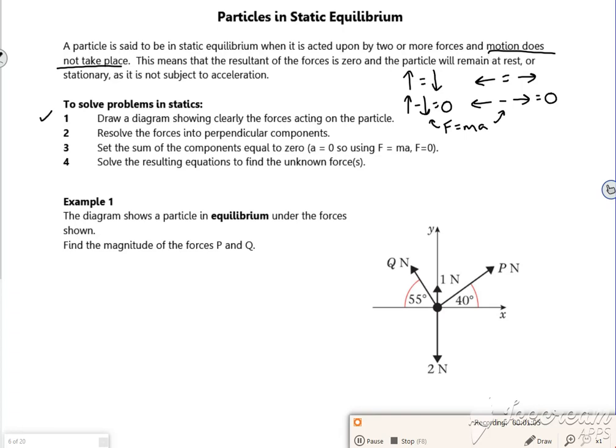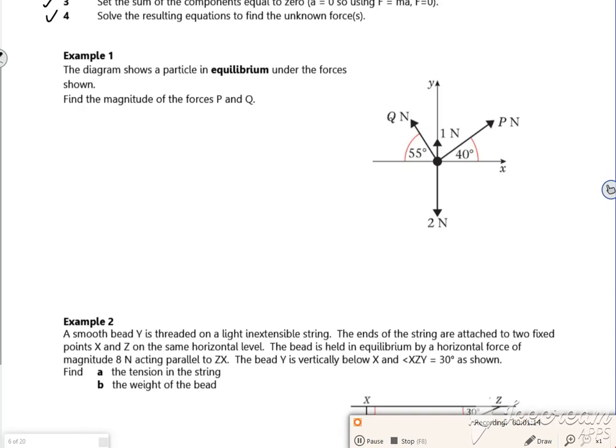So far, what's it say? Draw it, resolve it, work out the sum of it, and then solve it if there's any unknowns. Right, so let's have a look at this thing. Oops, wrong page. So it says a diagram shows a particle in equilibrium.